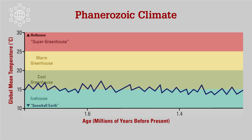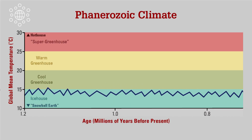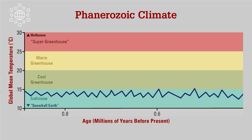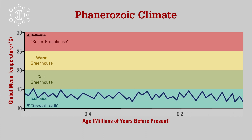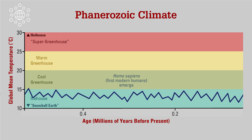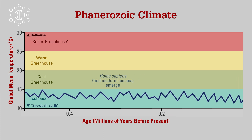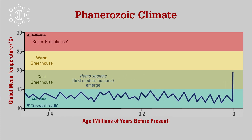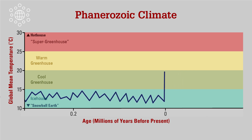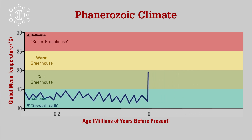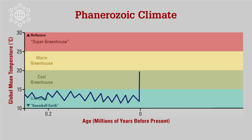Within this context of relatively cool climates, large ice sheets, and low sea levels, modern ecosystems, including humans, evolved and adapted to gradual cycles of limited change. Humans, and the environments we live in and rely on, have only ever known ice house conditions.